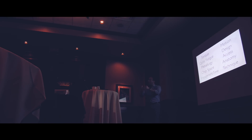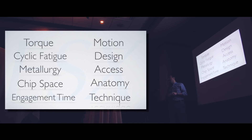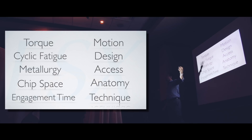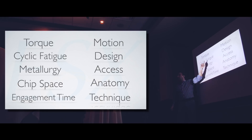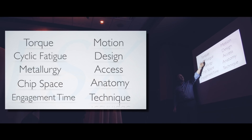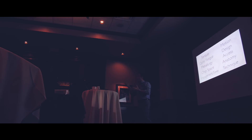Cyclic fatigue is the back-and-forth motion. Think of a dry cleaner's wire hanger — go back and forth repeatedly and grain boundaries form in the middle, weakening the metal and causing separation. Metallurgy is directly affected by torque and cyclic fatigue. Conventional non-heat-treated files have better torque resistance and cut well, but lower cyclic fatigue resistance — in a very curved canal, going back and forth, they can separate. Heat-treated files have great cyclic fatigue resistance and flexibility, but lower torque resistance, so they unwind more readily and lose edge fidelity quickly.